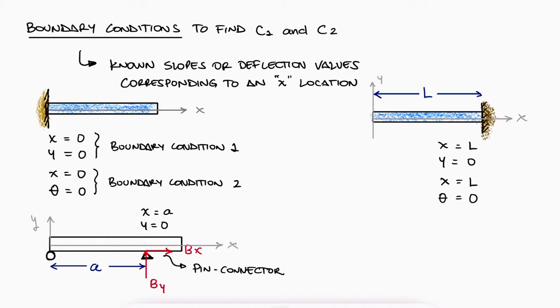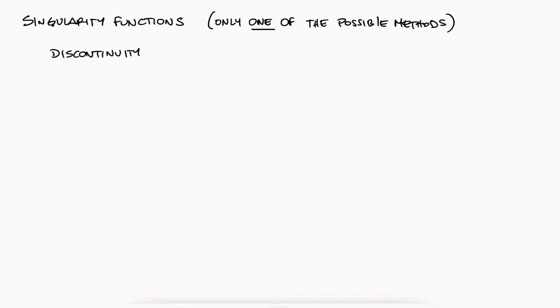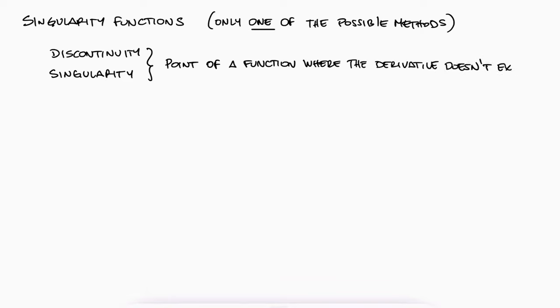Now, how do we write these equations for w, v, m, theta, and y? Most of these functions have discontinuities, so it makes sense to use step functions. Just be aware that your instructor might use a different method. We call this method the use of singularity functions, since a singularity is a point at which a function doesn't have a derivative. They are basically just a combination of step functions to describe the entire function.